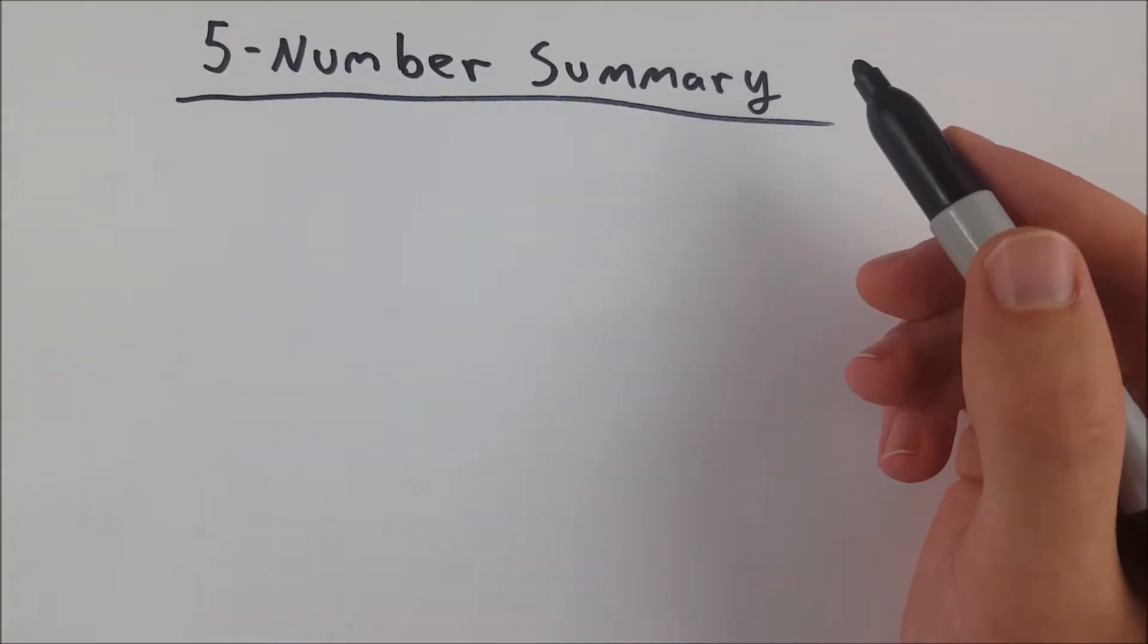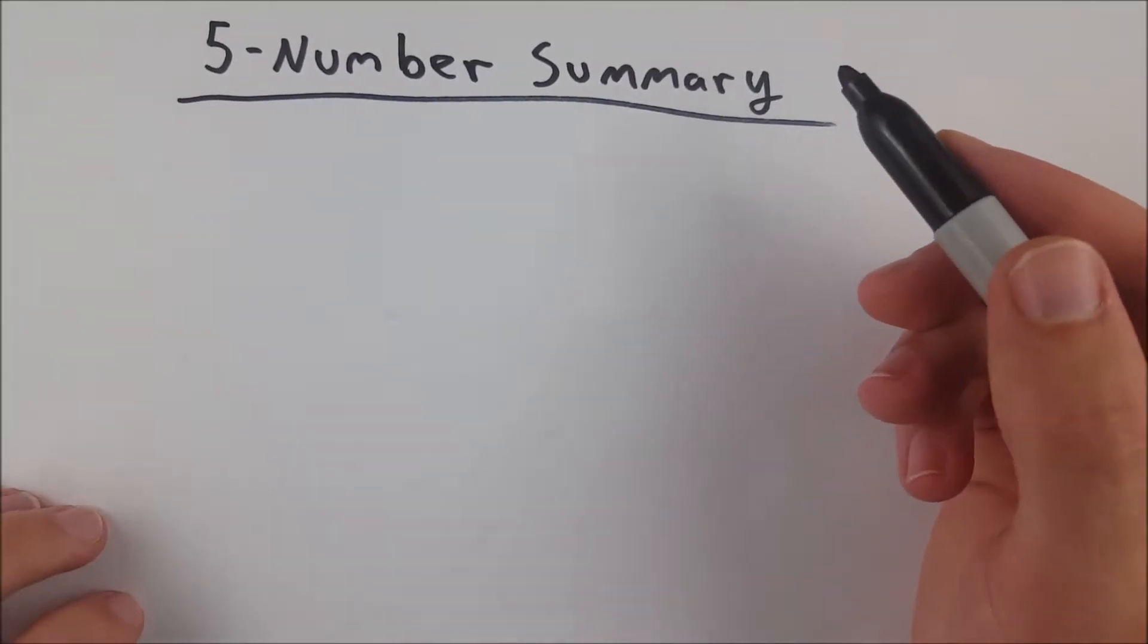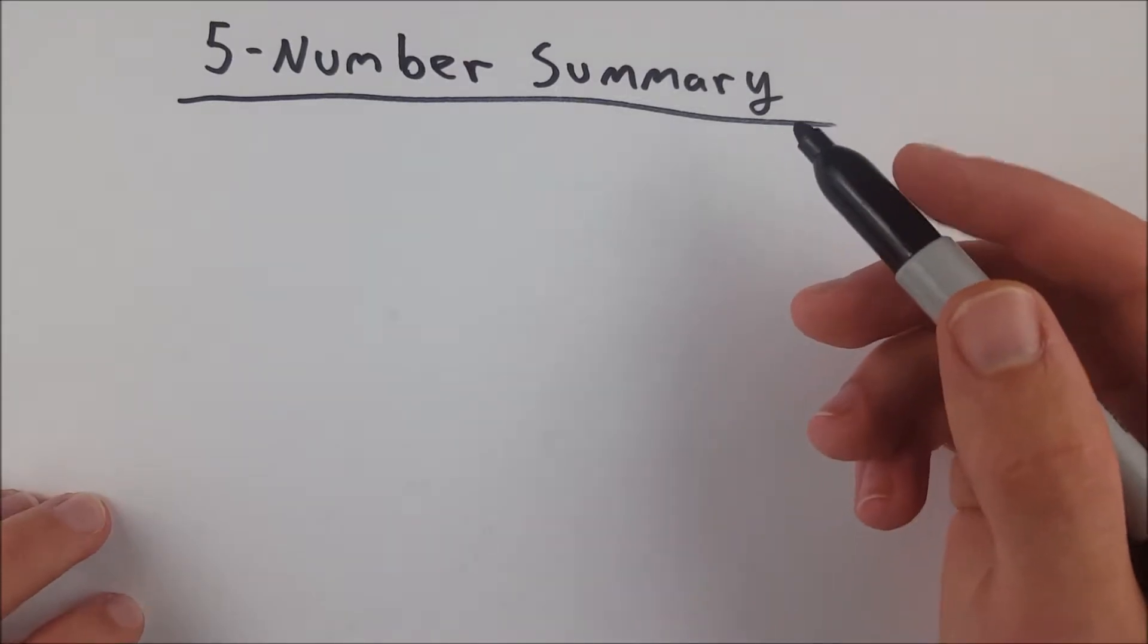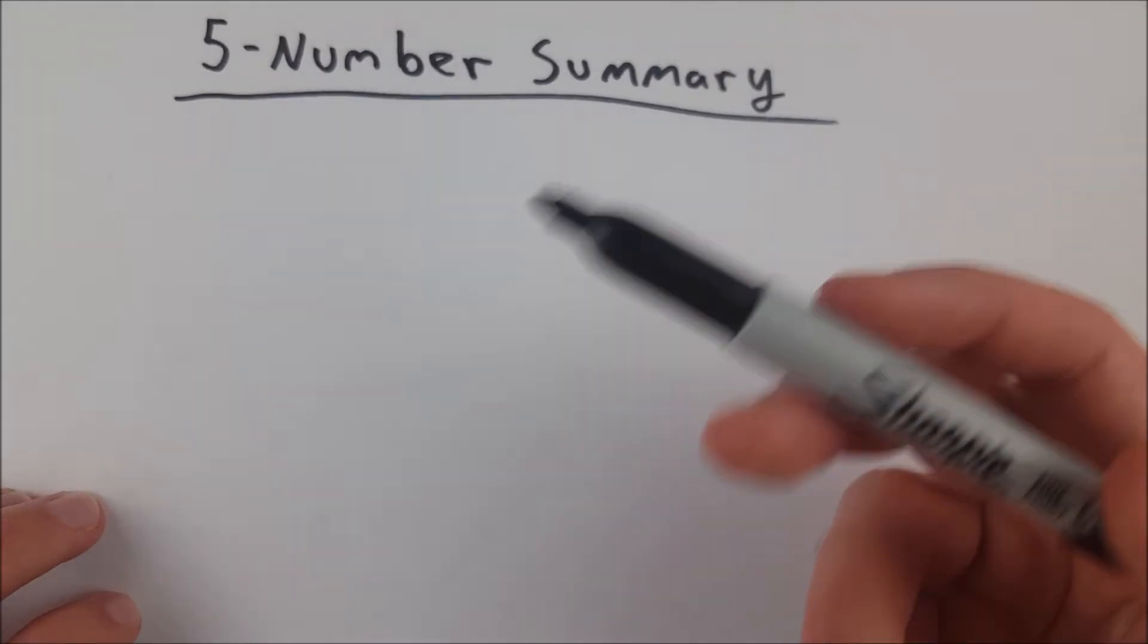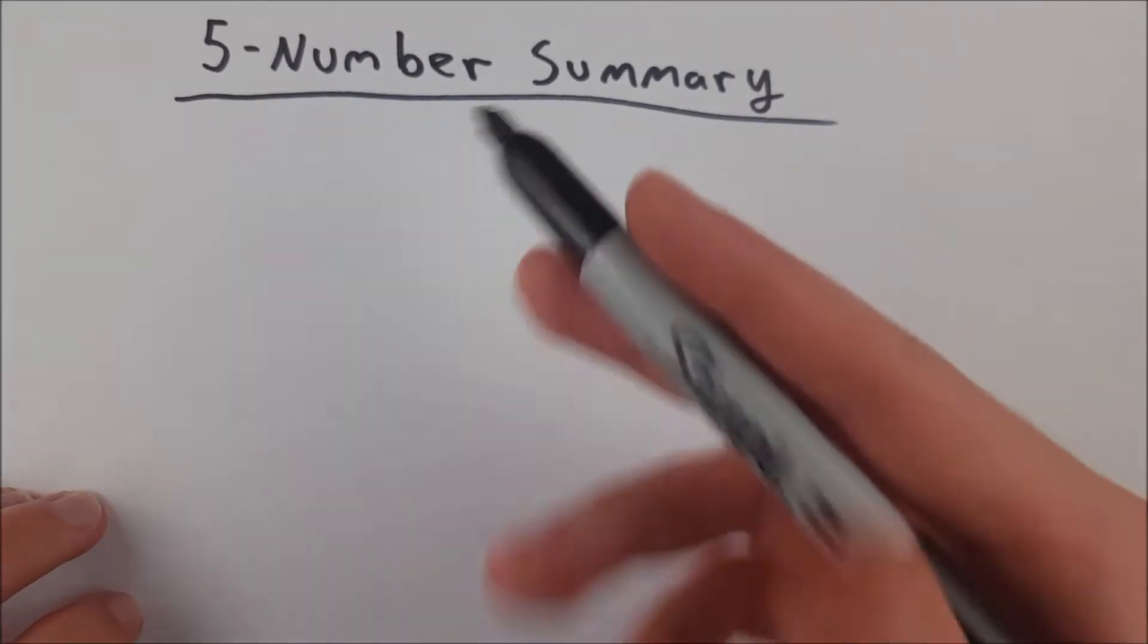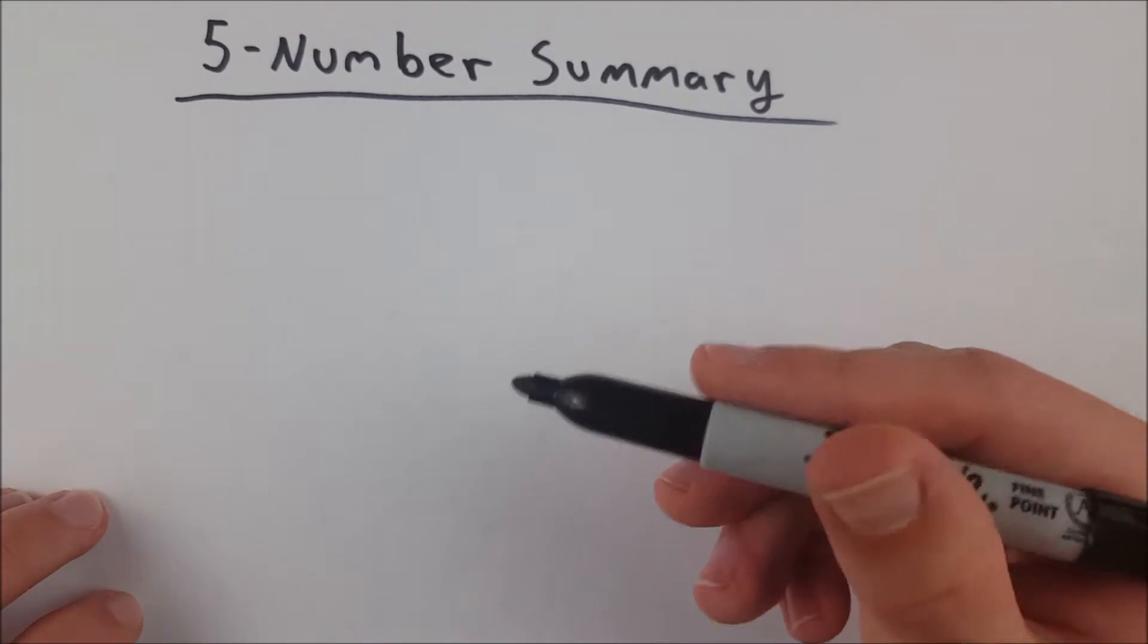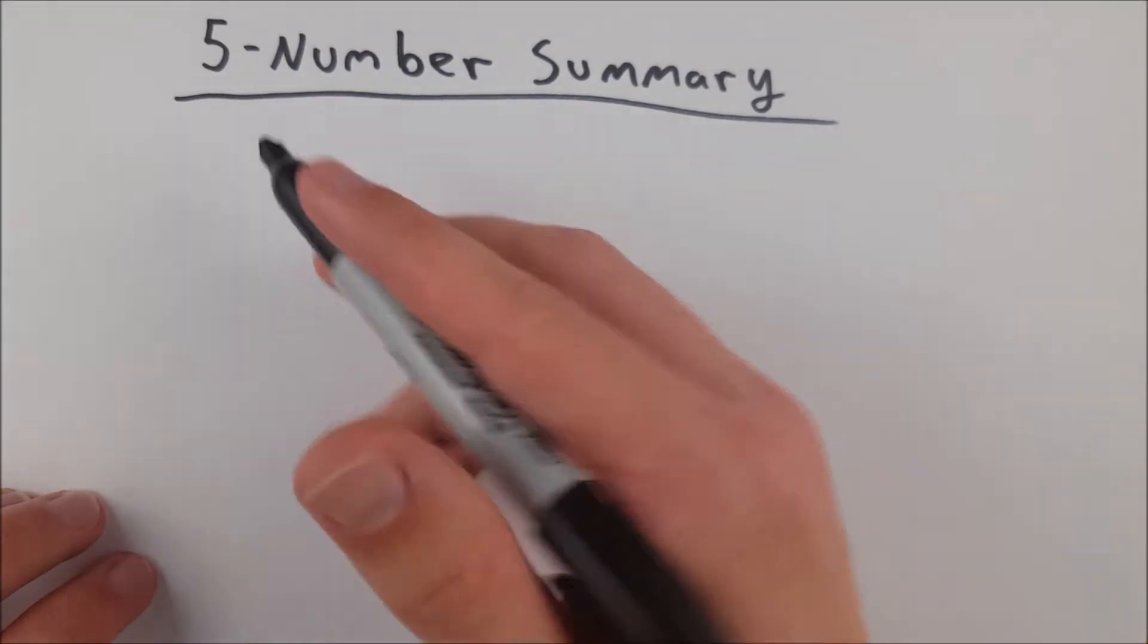What is a five-number summary of a set of data, and how do you find it? Five-number summary isn't too complicated. It's just five numbers that are probably pieces of statistics that you already know how to find. If not, hopefully this video helps you learn how to find them. So let's get into it.